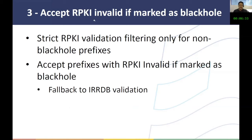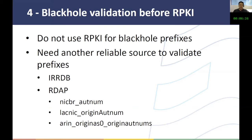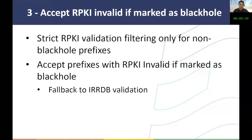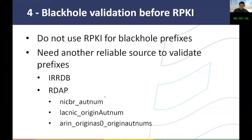The third strategy is to accept RPKI prefixes even if they are invalid, if they were marked as black holes. You would have strict RPKI validation filtering only for non-black hole prefixes, and you would accept prefixes with RPKI invalid status if marked as black holes. You would probably need to use an IRR DB to validate the origin and source of the prefix for the black hole. Some operators already use this methodology.